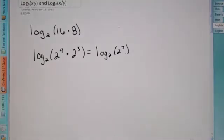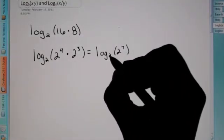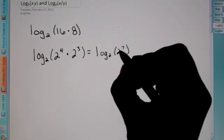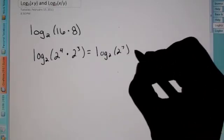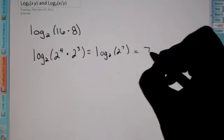which we said if you have a log with a base of 2 and then the larger base is 2 also, we know that this is equal to the logarithm, which is 7.